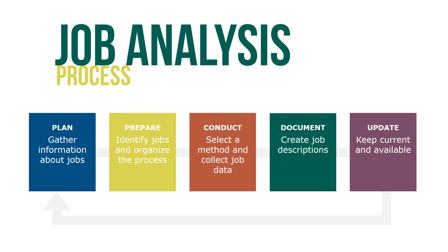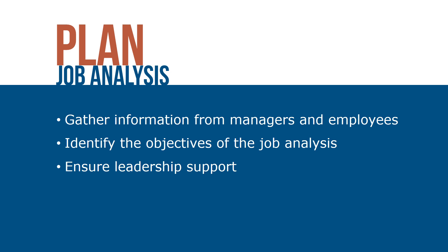Careful job analysis is well planned to ensure a successful outcome — that is, a useful job description. A simple five-step cyclical process for job analysis begins with planning. Step one: plan the job analysis. Prior to the process itself is the planning done to gather information about jobs from managers and employees. The most important consideration is to identify the objectives of job analysis, which might be as simple as updating job descriptions or as comprehensive as revising the compensation programs for the entire organization.